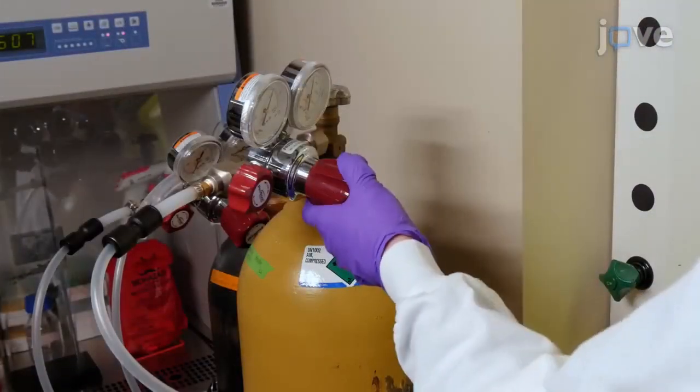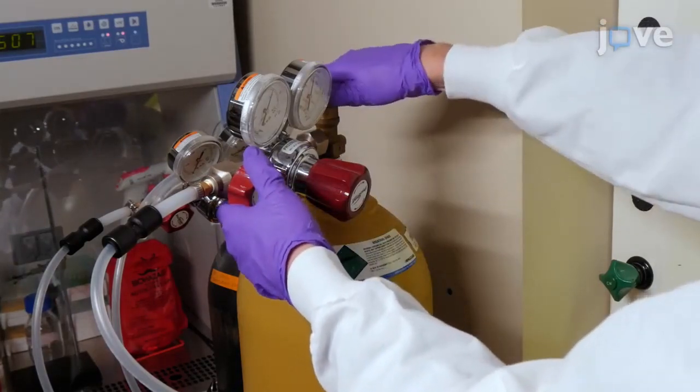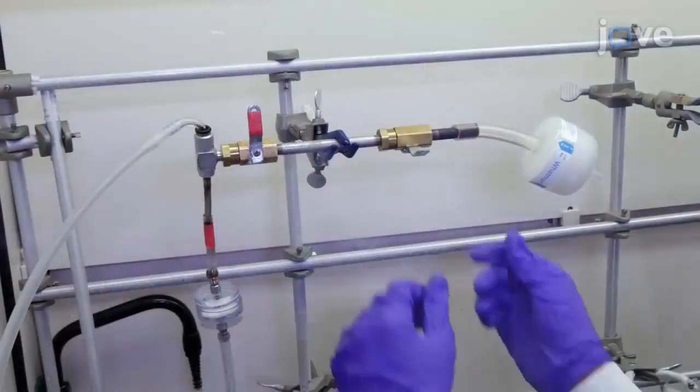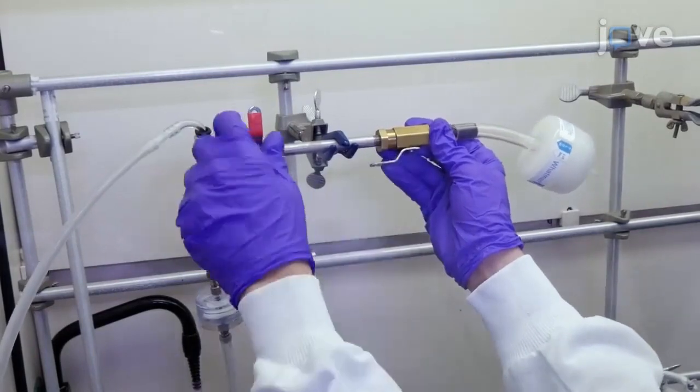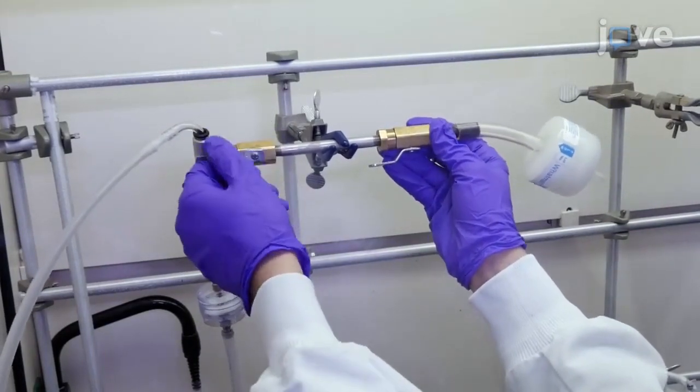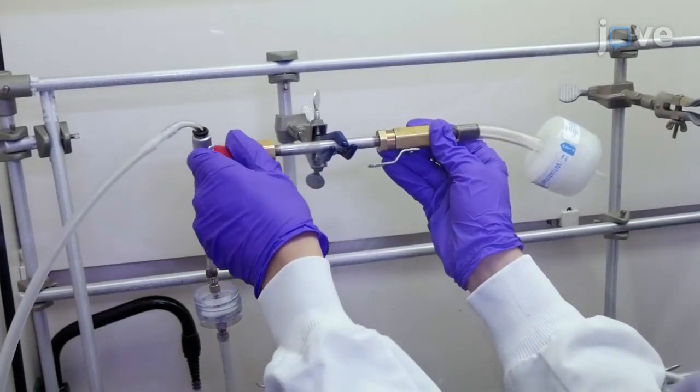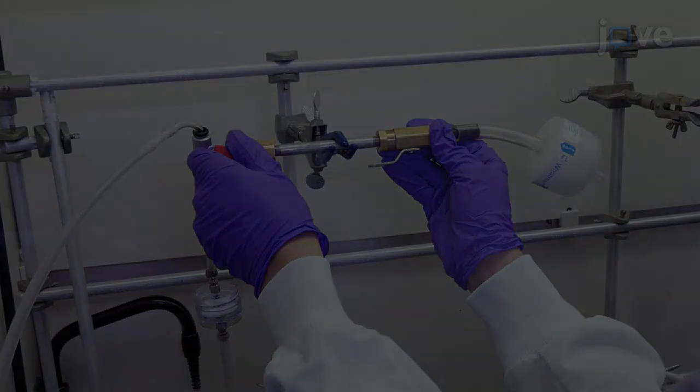Turn the main valve and regulator valves on the air tank to set the desired flow. Open the ball valve closest to the HEPA filter, then open the ball valve closest to the vacuum generator. Keep them open during characterization or exposure.